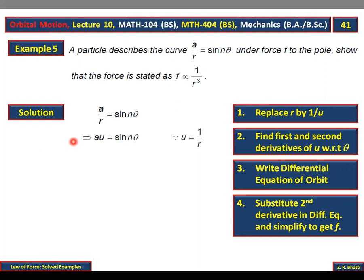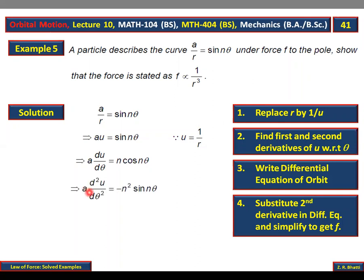Phir aap ne pehla step kiya: u equal to one over r replace kiya, r ki jagah u likh diya. Agla step: first derivative liya — du over d theta, sine n theta ka derivative obviously n cos n theta aayega. Phir dobara derivative lena hai, kyunki differential equation of the orbit mein second order derivatives involve hain. To double derivative liya, cos n theta ka derivative minus n sin n theta hoga. Yeh second order derivative aa gaya: d square u over d theta square equal to minus n square sine n theta.